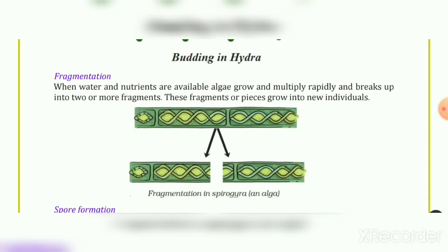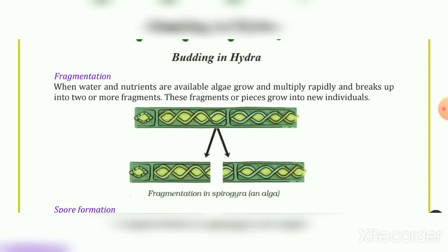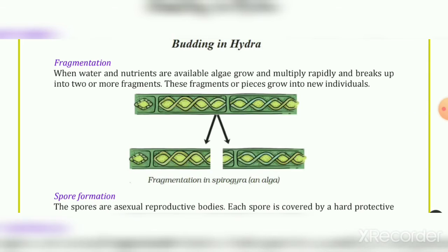The figure shows fragmentation in Spirogyra and algae. In the picture you can see how two or more fragments break up, and from those fragments new individuals grow.